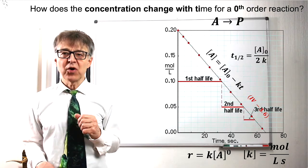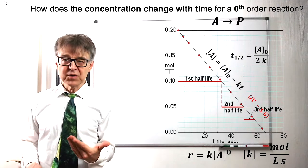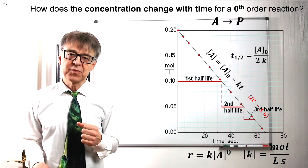You can also tell the order of a reaction by the unit of the rate constant. For a zeroes order reaction, the unit is moles per liter and second.